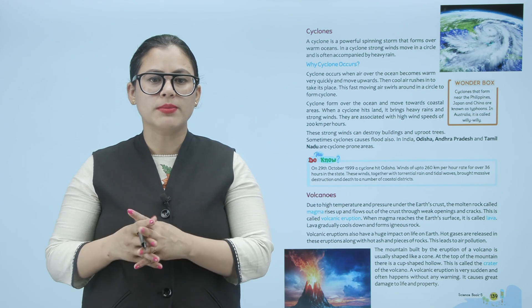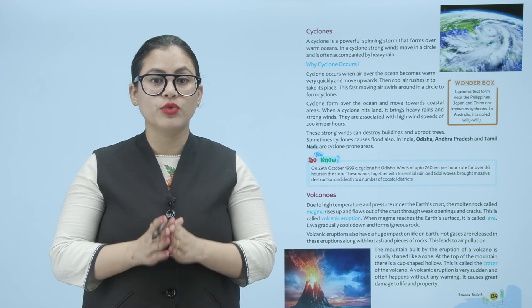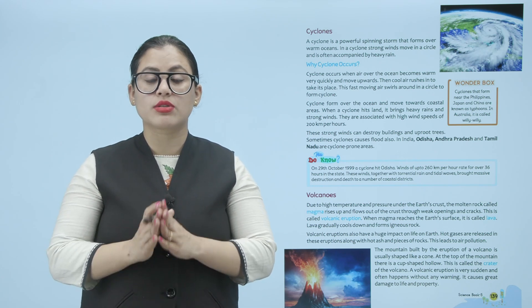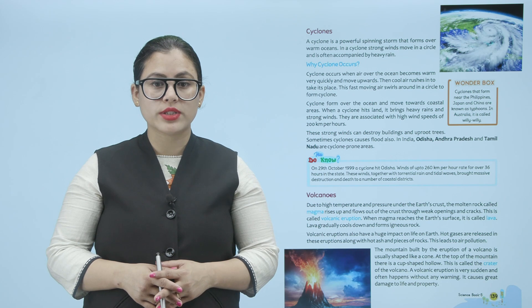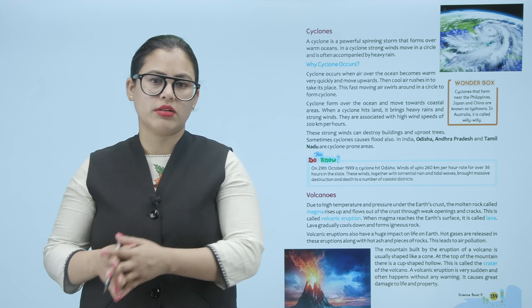Cyclones occur when air above the ocean becomes warm very quickly and moves upwards. The cool air rushes in to take its place, and the fast-moving air swirls around in a circle to form a cyclone. Cyclones form over the ocean and move towards coastal areas. When a cyclone hits land, it brings heavy rains and strong winds with high wind speeds of up to 200 km per hour. These strong winds can destroy buildings and uproot trees, and sometimes cyclones cause floods. In India, Odisha, Andhra Pradesh and Tamil Nadu are cyclone-prone areas.